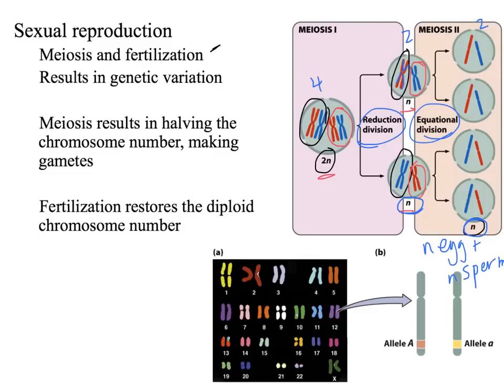Thinking about what's happening in this meiotic process: if we have chromosome number 12 here in a homologous pair, this homologous pair carries a gene A. This chromosome has allele A on it, and this one has allele little a. The meiotic process is going to separate those homologous chromosomes from each other so that a gamete only receives one of those chromosome number 12s, containing either the big A allele or the little a allele at that gene.